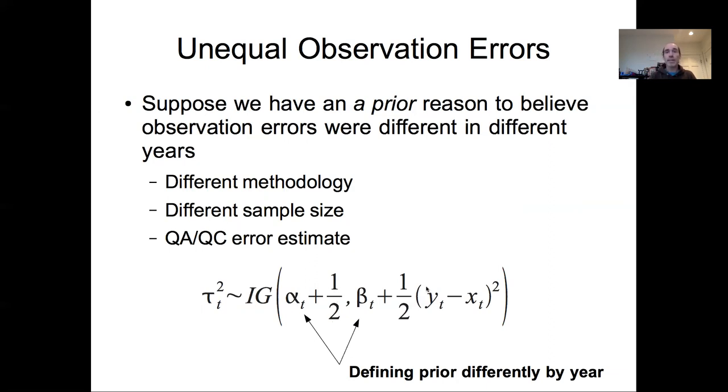We have n of one and one observation, one single squared error between the observed data and the latent state. With only one observation, most of the inference we can make about this observation error is coming from the prior. So it's really important if you're modeling unequal observation errors that you have informative priors.